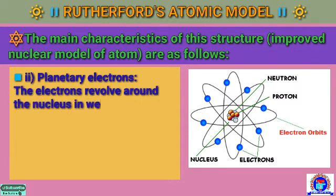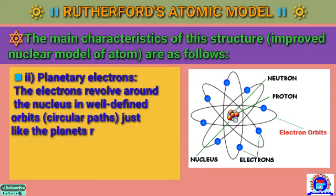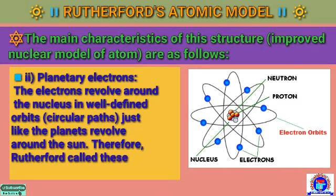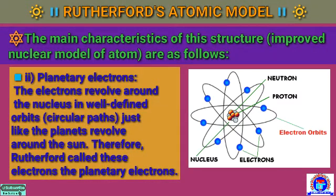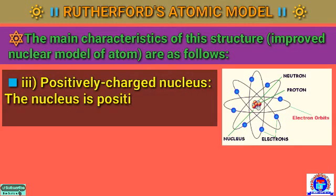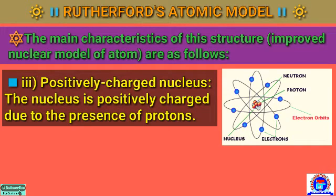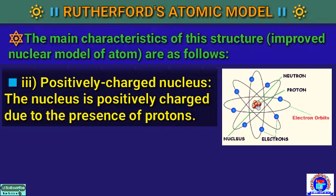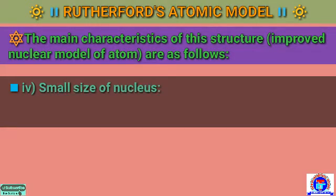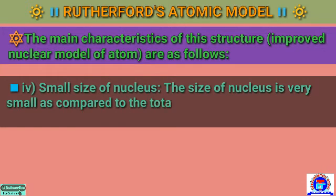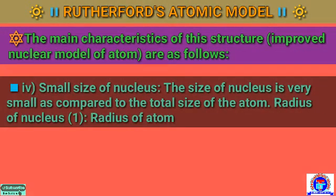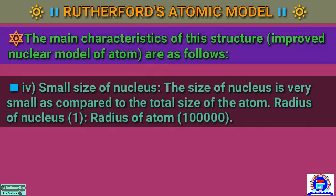Number 2: the planetary electrons. The electrons revolve around the nucleus in well-defined orbits — that is, circular paths — just like the planets revolve around the sun. Therefore, Rutherford called these electrons the planetary electrons. Number 3: positively charged nucleus. The nucleus is positively charged due to the presence of protons. Number 4: small size of nucleus. The size of the nucleus is very small as compared to the total size of the atom. The radius of the nucleus is 1 and the radius of an atom is 1 lakh.